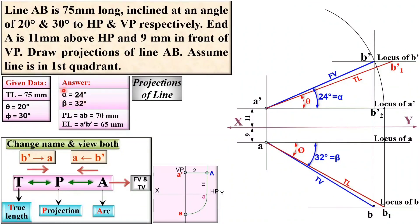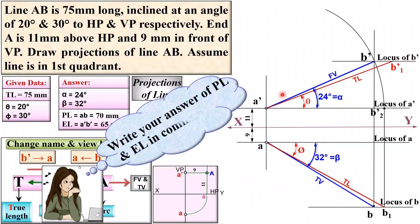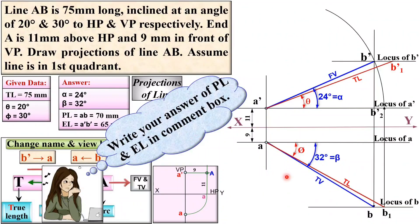Keep in mind that alpha, beta, and the extra measurements are additional information for this problem — they can be found using this method if asked in an examination. Draw the same problem in your sketchbook with instruments and write your answers for plan length and elevation length in the comment box. Thanks, dear friends, for watching this video. Please hit the like button to appreciate it.